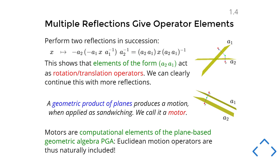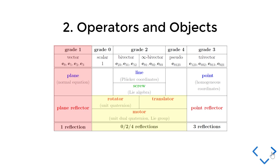So just by continuing this original scheme of sandwiching, we find these elements in our algebra that should be the translation and the rotation operator. These are, of course, going to be our basic motions when we do Euclidean motions. We're going to combine them. It's good to have a name for them. We call them a motor because they move things. Motors are the computational elements of the plane-based geometric algebra. And so we don't have objects yet, but at least we have general motions of a Euclidean kind.